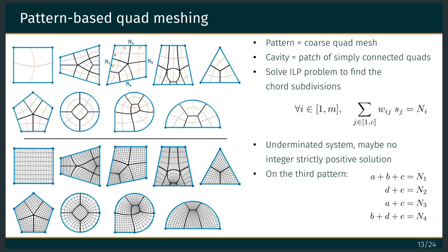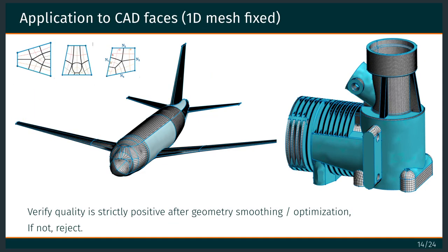We can do this by solving linear integer problems, where the unknowns are the number of subdivisions in the topological chords, which are the dashed lines shown here.